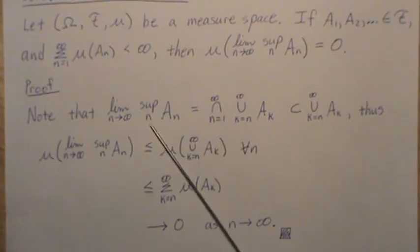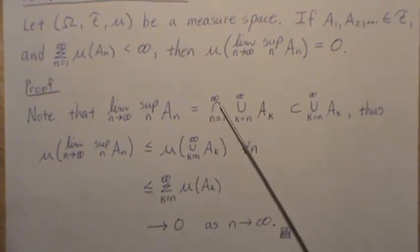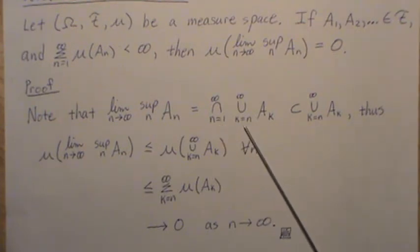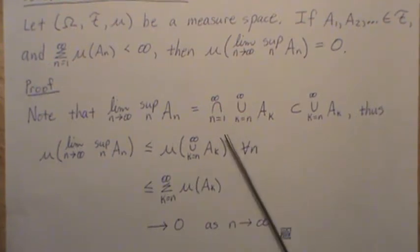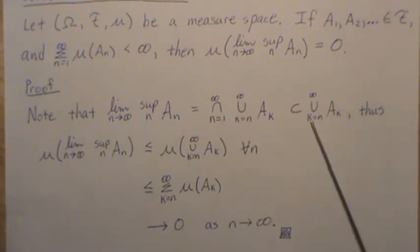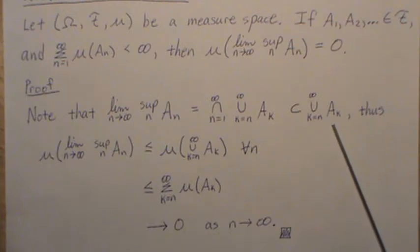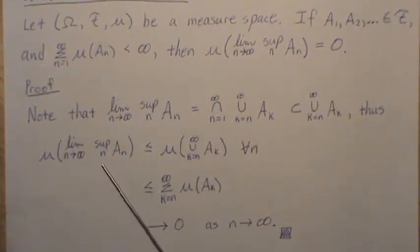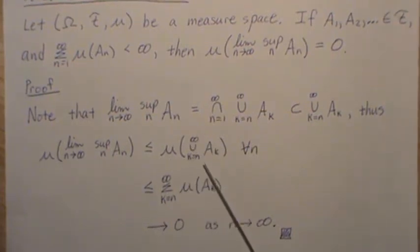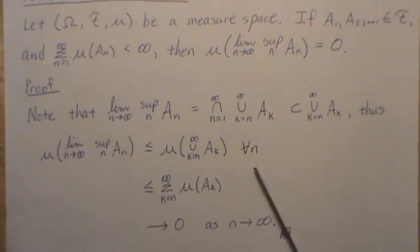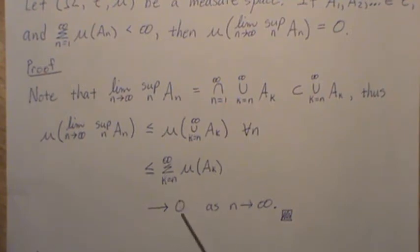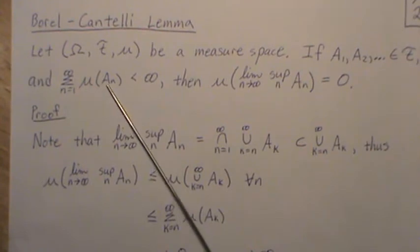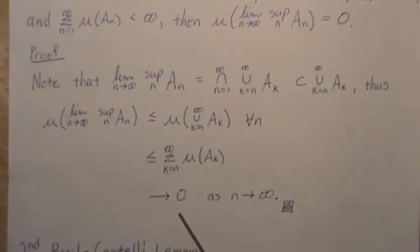Note that the limit supremum of aN can be represented as the intersection from n equals one to infinity of the union of k equals n to infinity of aK. We have a few videos illustrating this representation. And if we take off the intersection, this is a subset of the union from k equals n to infinity of aK. Thus, the measure of the limit supremum of aN is less than or equal to the measure of this union, for all n. And by subadditivity, this is less than or equal to the sum of k equals n to infinity of the measure of aK. But if we let n go to infinity, this converges to zero because the terms have to converge to zero. And we're finished — we showed that it converges to zero.